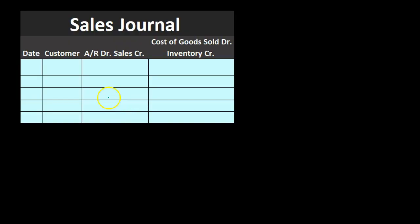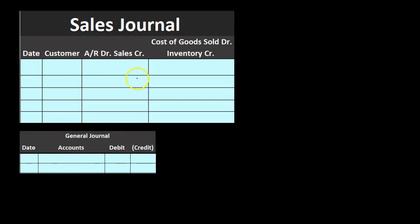When we record the sales journal, we're going to enter data during the month. This saves us a lot of time because we enter one line item per transaction rather than four line items for a normal journal entry each time, and then recording that to the general ledger and making a trial balance. At the end of the month we'll sum up these columns and make one journal entry instead of a journal entry every time we make a sale. We could do this for a day, a week, or a month.